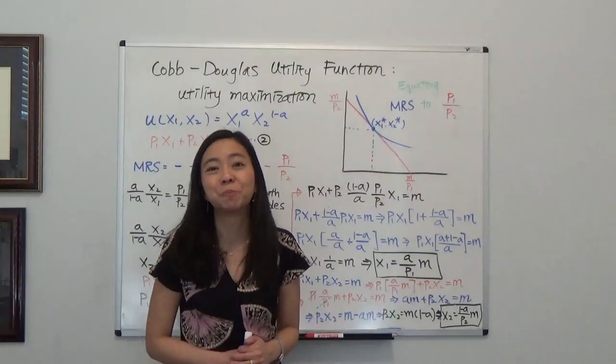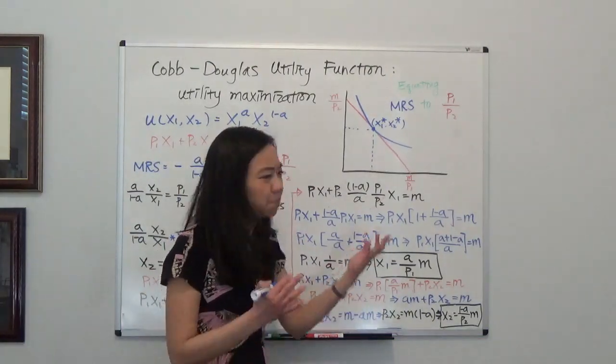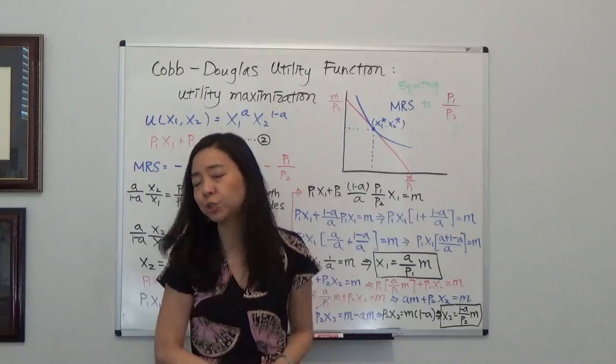So now some of you will complain. Why is this p1 and p2? Why is it m? Why don't you give me a number?